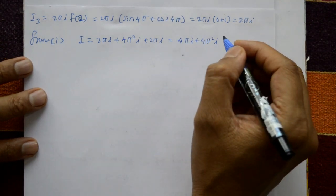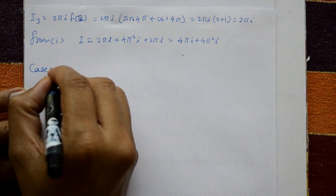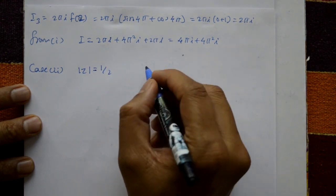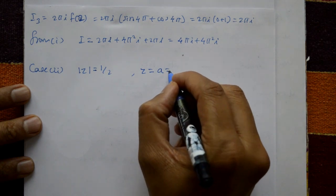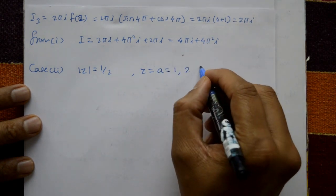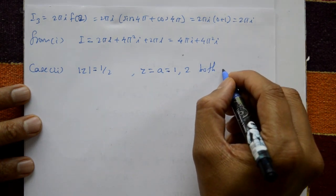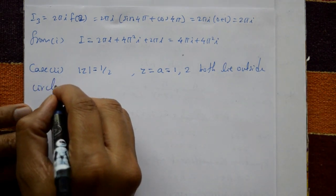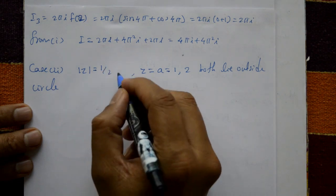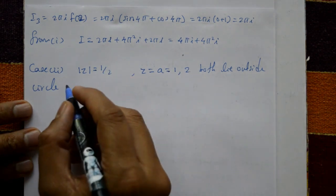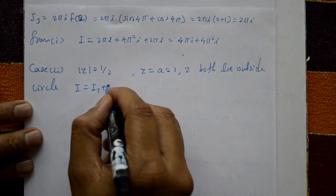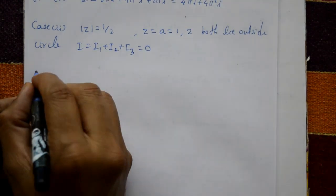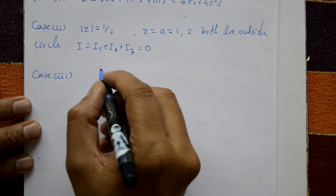Case 2: |z| = 1/2. The singular points z = 1 and z = 2 both lie outside this circle of radius 1/2. Therefore by Cauchy's theorem, I1 = I2 = I3 = 0, and hence I = 0.